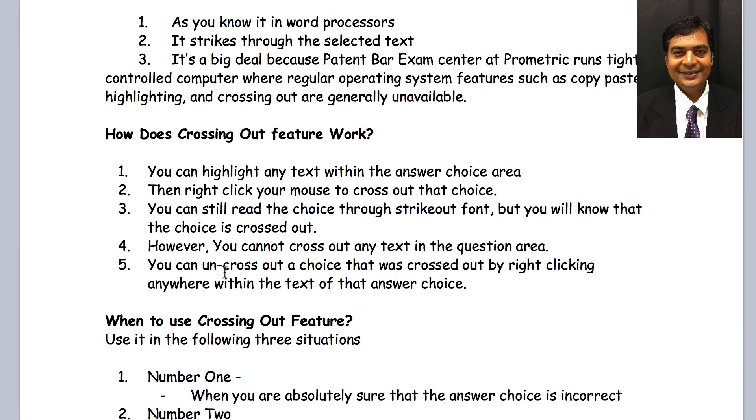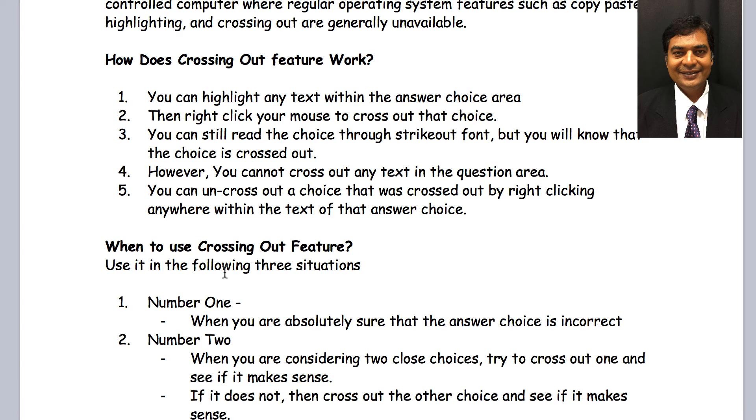So, now let's talk about how this crossing out feature works. You can highlight any text within the answer choice area. You cannot select anything in the question up to the call of the question, but this only applies to the answer selection. You can do highlighting but not crossing out, and then you simply right-click. You don't have to select the whole answer choice. For example, if you want to strike out B, you don't have to select all the text in answer choice B. You just position your mouse on any one word in answer choice B, right-click it, and it is crossed out. Again, you can still read underneath it, but it is crossed out for you.